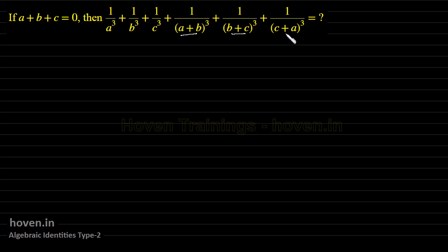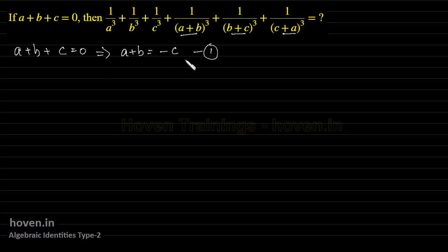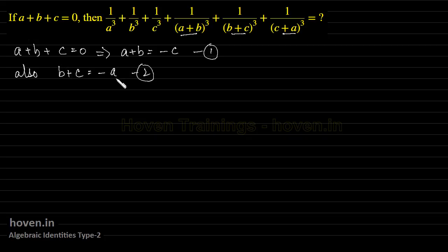We can observe: a plus b plus c equal to 0 implies a plus b is equal to minus c. Also, b plus c is equal to minus a, because a plus b plus c is 0, so b plus c will be minus a. And the third possibility: c plus a is equal to minus b. This is also observable.